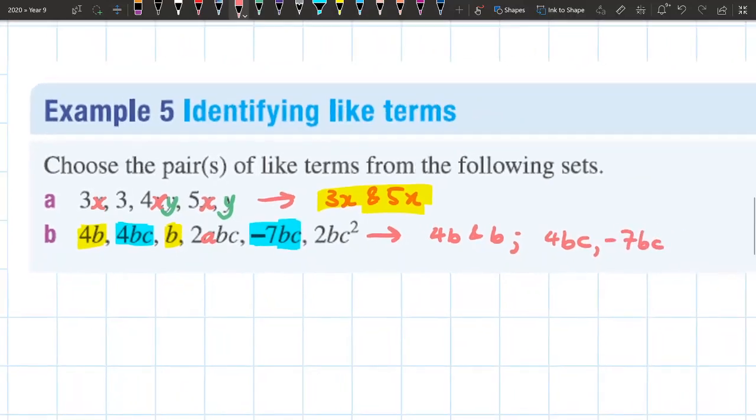Let's have a look at this last term, 2bc². Now if you have a look at this, this has both a b and a c, with both the letters that we want. But this isn't a like term. Can you think why? Well, if you have a look, in this example here, the c has a power 2. My c in my 4bc and my 7bc, they don't have a power at the top here. There's nothing there, it's actually a hidden 1 again. So here, this last term 2bc² is not going to be a like term. So all I have is 4bc and -7bc.